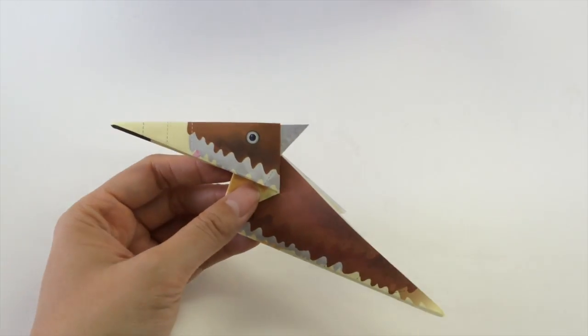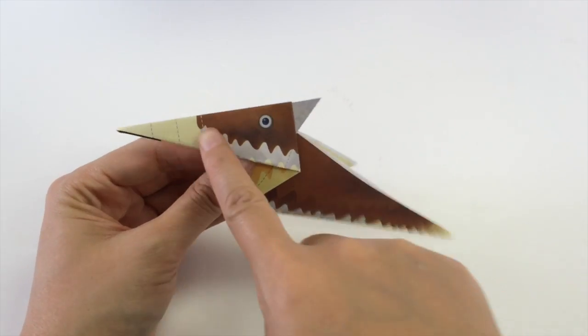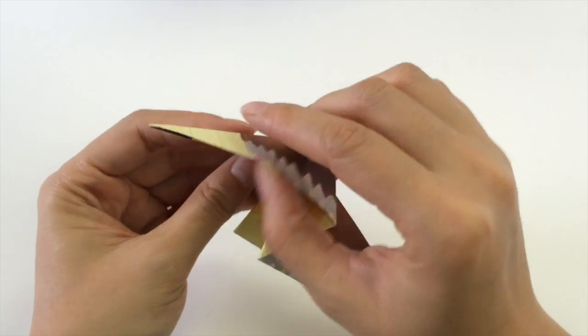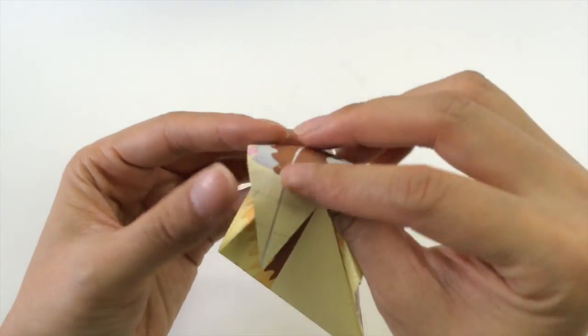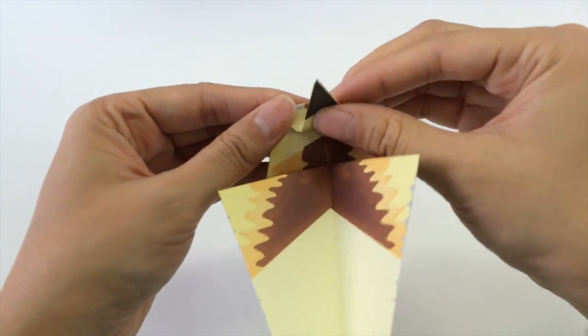Next, we're going to do two inside reverse folds to make the nose. So we're going to fold it inwards like this along the dotted line. Open it up, fold it inwards. Make two of them so back out like this.